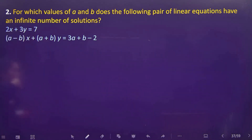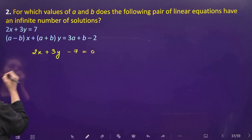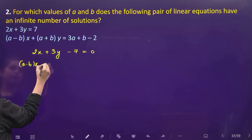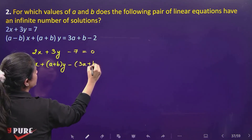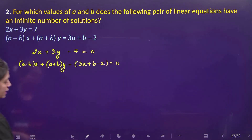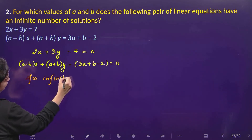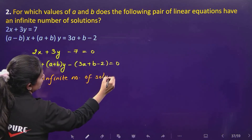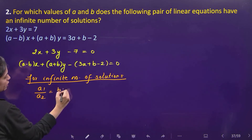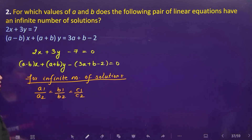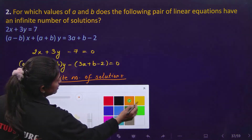Let us write the equations in general form. The first equation is 2x + 3y − 7 = 0 and the second equation is (a − b)x + (a + b)y − (3a + b − 2) = 0. For infinite number of solutions, the condition is a1/a2 = b1/b2 = c1/c2.